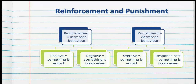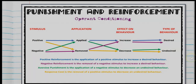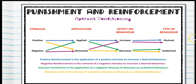Remember this key summary: no matter what type of reinforcement it is, reinforcement always increases behavior. Punishment always decreases behavior. Positive means something is added; negative means something is taken away. Aversive punishment — something unpleasant is added. Response cost — something pleasant is taken away. To finish with the definitions: positive reinforcement is the addition of a positive stimulus to increase the desired behavior. Negative reinforcement is the removal of a negative stimulus to increase the desired behavior. Aversive punishment is the addition of a negative stimulus to decrease an undesired behavior. Response cost is the removal of a positive stimulus to decrease an undesired behavior.